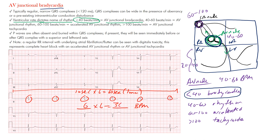We count 6 complexes; 6 times 6 is 36 beats per minute — obviously lower than 40, confirming a junctional bradycardia. The R-to-R intervals are the same throughout, so we call this a regular rhythm. It's a regular narrow QRS. By narrow, we mean the width of the QRS complex from beginning to end should be less than 120 milliseconds, or three small boxes.